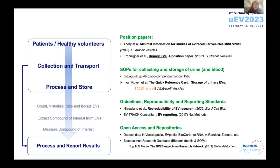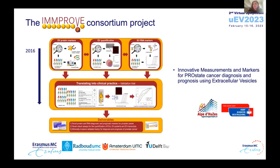I promised to give you a practical example, which comes from a Dutch collaborative consortium project funded by the Dutch Cancer Society. It's a project called IMPROVE — which stands for Innovative Measures and Markers for Prostate Cancer Diagnosis and Prognosis Using Extracellular Vesicles. The goal of the consortium was to develop techniques and protocols for detection and quantitation of urinary EVs and protein and RNA cargo. I was particularly focused on the RNA cargo. And last but not least, to translate findings into clinical practice via pre-validation trials. Throughout the entire project we have been biobanking material to be able to perform the validation step at the end.